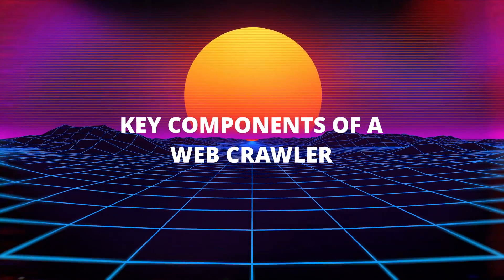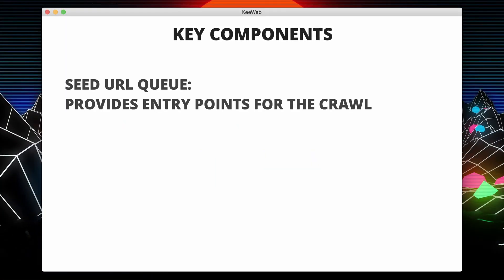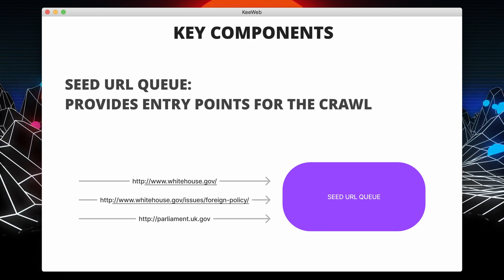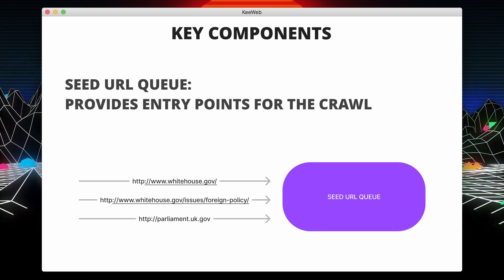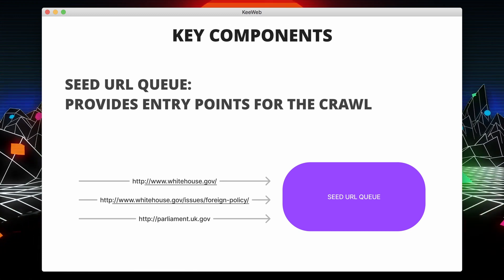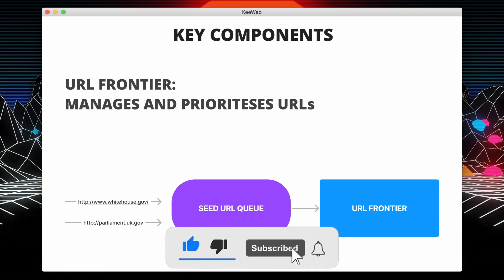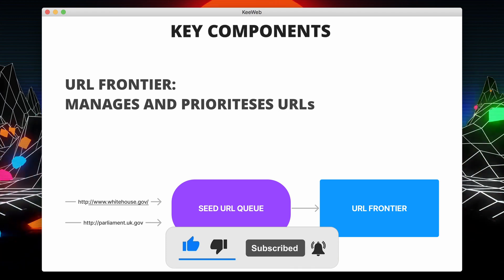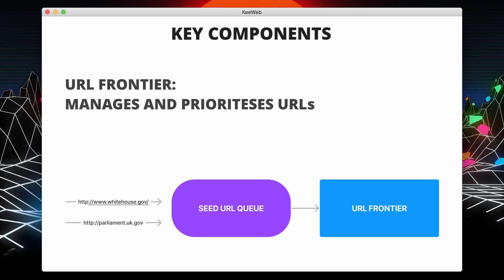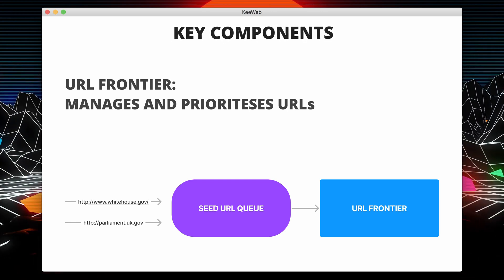Now let's break down the key components of a web crawling system. The first component is the seed URL queue. In the initial stage, the crawler starts with a set of seed URLs — these are the entry points for the crawl and are added to a queue which serves as the starting point for exploration. Then we have the URL frontier. The URL frontier is like the to-do list of the crawler. It manages and prioritizes URLs based on factors like importance, last crawl time, or page popularity, ensuring an efficient and targeted crawl.